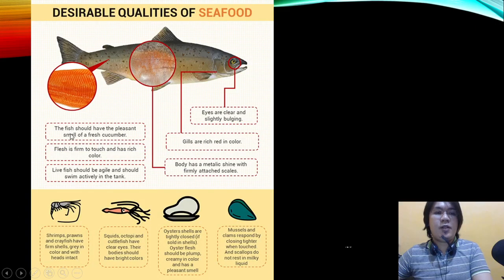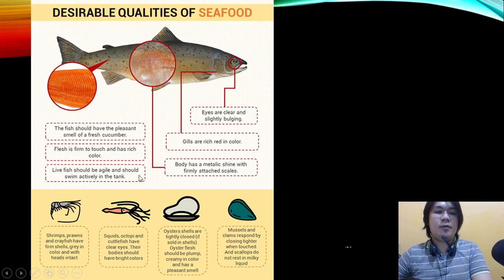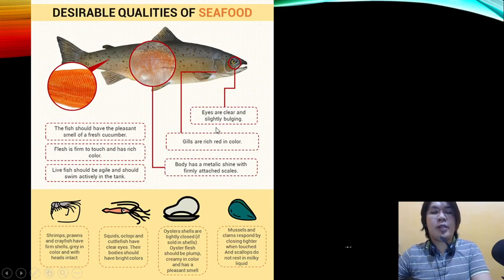These are the desirable qualities of seafood: fish should have a pleasant smell of fresh cucumber; flesh should be firm to touch and rich in color. Live fish should be agile and swim actively. The eyes should be clear and slightly bulging, and the gills should be rich red in color.